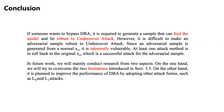Conclusion. If someone wants to bypass DBA, they must generate a sample that can fool the model and be robust to undercover attack. However, it is difficult to make an adversarial sample robust to undercover attack — since an adversarial sample is generated from a normal sample, it is inherently vulnerable. At least one attack method can roll back to the original sample, which constitutes a successful attack against the adversarial sample. In future work, we will conduct research from two aspects: overcoming the two limitations introduced in section 3.3, and improving the performance of DBA by adopting other attack forms such as L_0 and L_2 attacks.